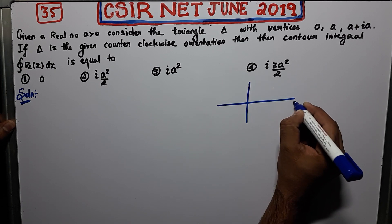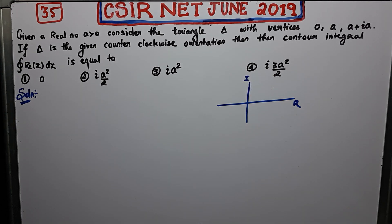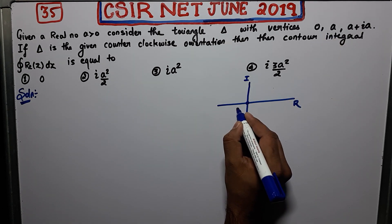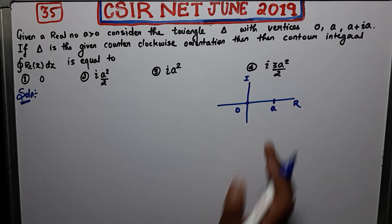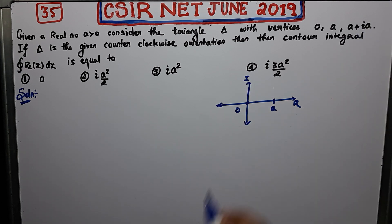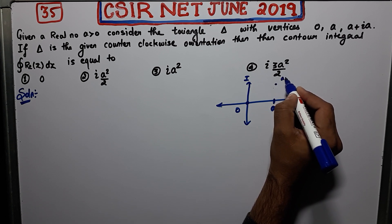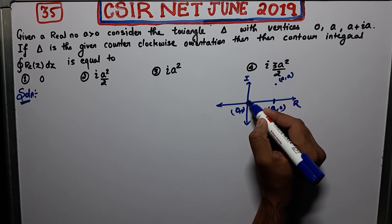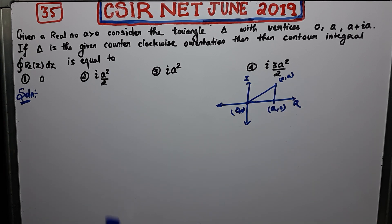Let us firstly draw what the contour you are given with looks like. This is your real axis and this is your imaginary axis. You are given with the point zero. 'a' is a real number which is greater than zero, so it must be somewhere here. The third vertex is a + ia, which you can say is (a, a). This is the contour — the triangle — that you are given with.